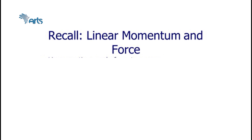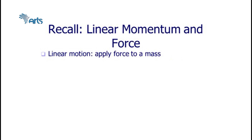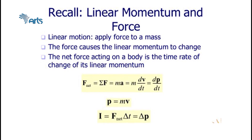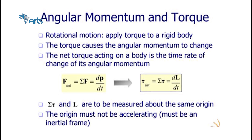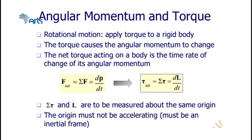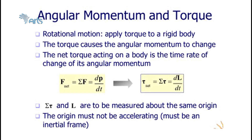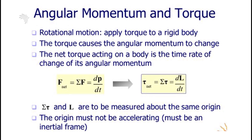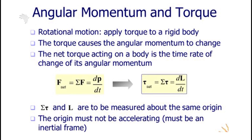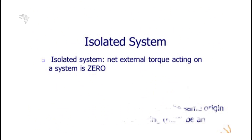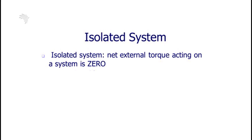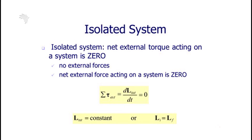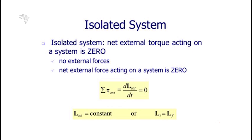In linear motion, force causes linear momentum to change, and net force is the time rate of change of linear momentum. Analogously, for rotational motion, torque causes angular momentum to change, and the net torque is the time rate of change of angular momentum. The net torque and angular momentum must be measured about the same origin, and the origin must not be accelerating — it must be an inertial frame. For an isolated system, net external torque is zero and net external force is zero. Therefore, linear momentum is constant and final angular momentum equals initial angular momentum.